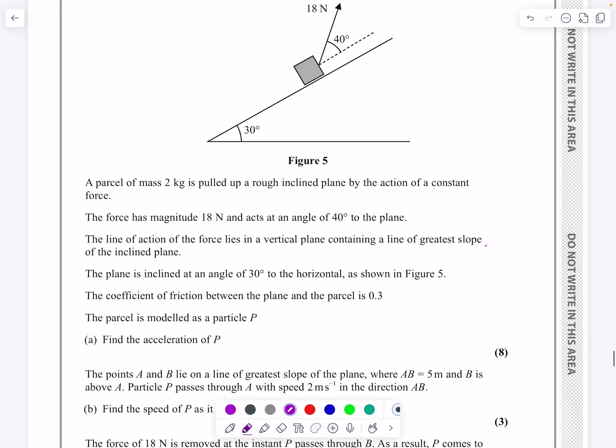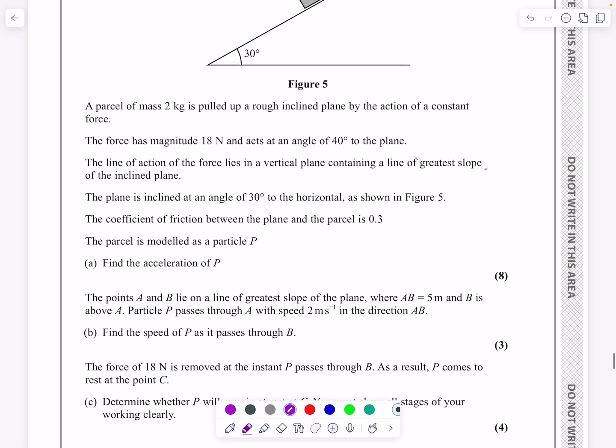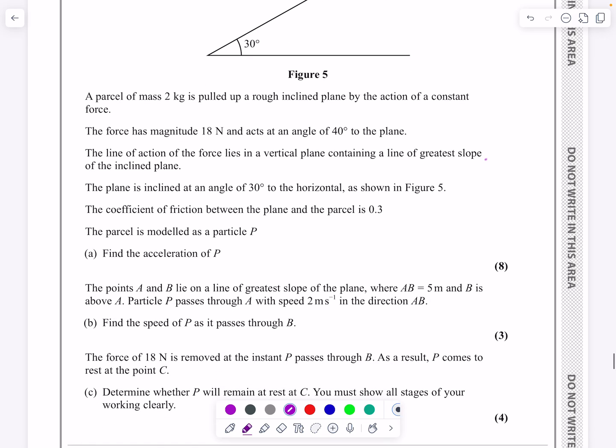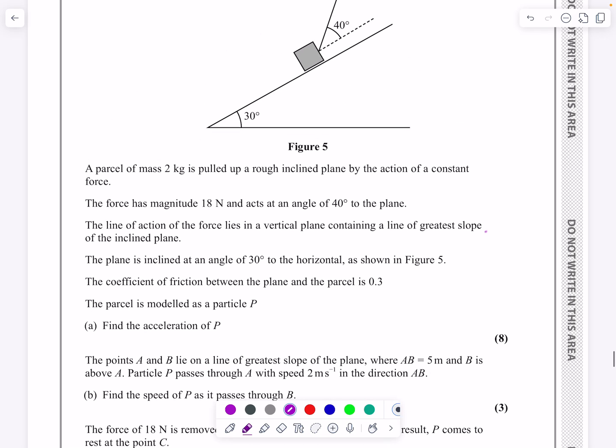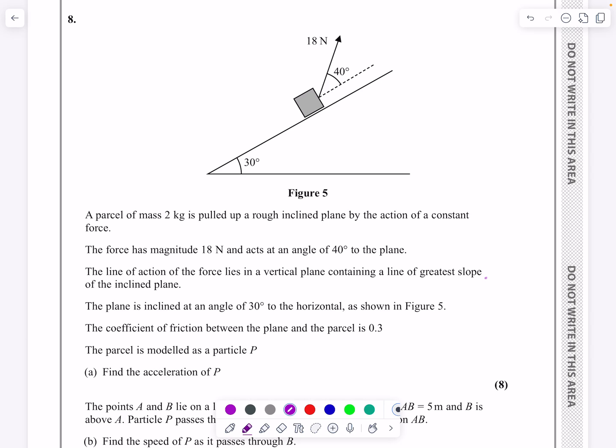I'll give you time to maybe pause the video and just read through all the information we've got there. So we've got this situation, a mass 2 kilograms being pulled up a rough inclined plane so that we know we've got friction opposing it. The strange situation about this one is the fact that we've got this force acting at an angle here. But everything else is fairly standard. We've got our 30 degrees to our horizontal. We've got our mu being equal to 0.3.